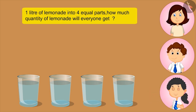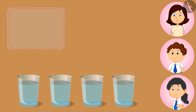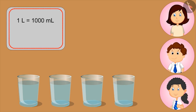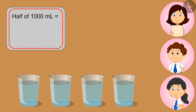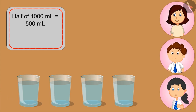400 ml? No, that's not right. How many milliliters are there in a liter? 1000 milliliters. Correct. Now if I fill these two glasses, how much lemonade will be left in the jug? Half the jug is still full. What is half of a liter? Kids, you can pause the video and think about the answer. 500 ml. This means two glasses contain 500 ml of lemonade.